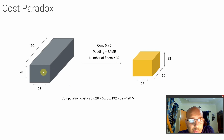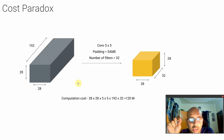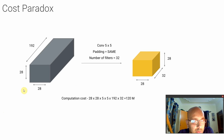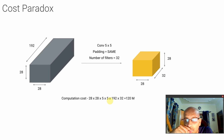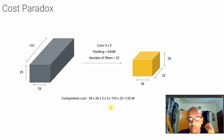When the filter gets applied to this volume, every multiplication leads to one computation cycle. The number of computation cycles is 28 by 28 — the height and width of the input volume — times 5 by 5, which is the filter matrix, times 192 channels, times 32 filters. This gives us a cost of 120 million, which is huge.